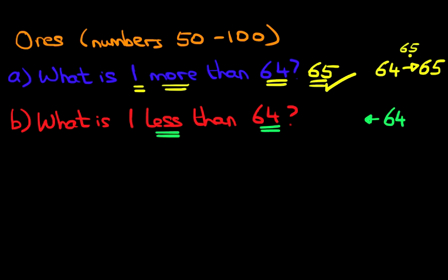How much are we going back by? We're going back by 1, so there's only one dot here. We have to count back from number 64. The number before 64 is 63. That is our answer: 63. And another tick.